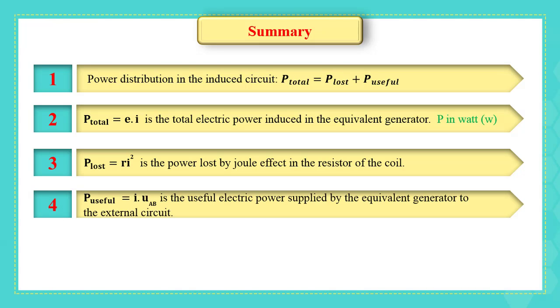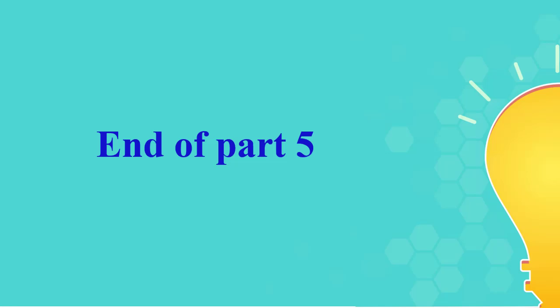4. P useful equals I multiplied by the voltage across AB is the useful electric power supplied by the equivalent generator to the external circuit. 5. This is the end of chapter 8 electromagnetic induction. Study well and thank you for your attention.